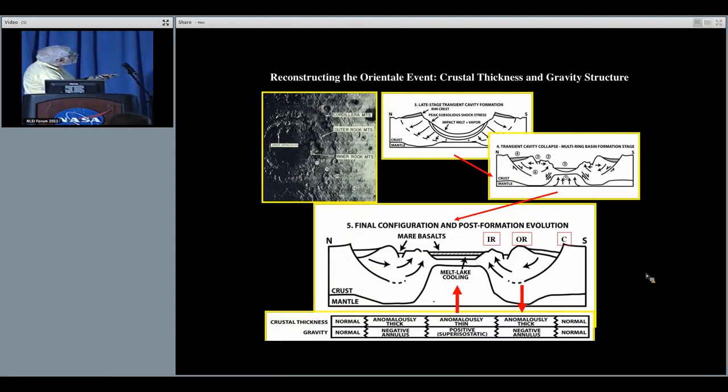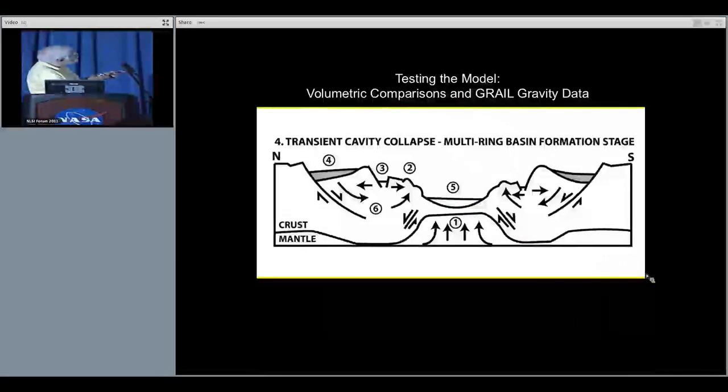How do we reconstruct the Orientale event? It would look something like this. This would be the transient cavity, and as the transient cavity began to collapse along the edge of the Cordillera mountain range, the central part was uplifted and ultimately we end up with a cross section that we would predict look something like this in the subsurface. This is what you see today on the top. This is what we think happened and these are the steps that we believe represent these stages in the evolution of the basin. This has implications for crustal thickness and gravity. These can be beautifully tested with the upcoming GRAIL mission. We would predict an anomalously thick crust here, this could be what the negative annulus might be, anomalously thin, this could be positive, a super-isostatic situation caused by the significant uplift of the basin in the terminal phases. This is testable.